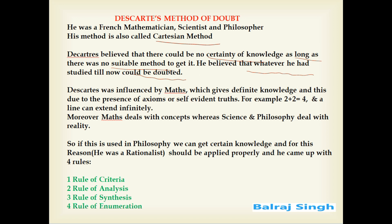Since Descartes was a mathematician, he was highly influenced by maths, and we know that maths can give us definite knowledge. This is primarily due to the fact that maths deals with axioms, or self-evident truths, and with concepts. Maths has so many axioms because it deals with concepts, unlike philosophy or sciences which deal with the reality of the world. Descartes believed that if we use a similar method in philosophy, we can also get certain knowledge in philosophy.